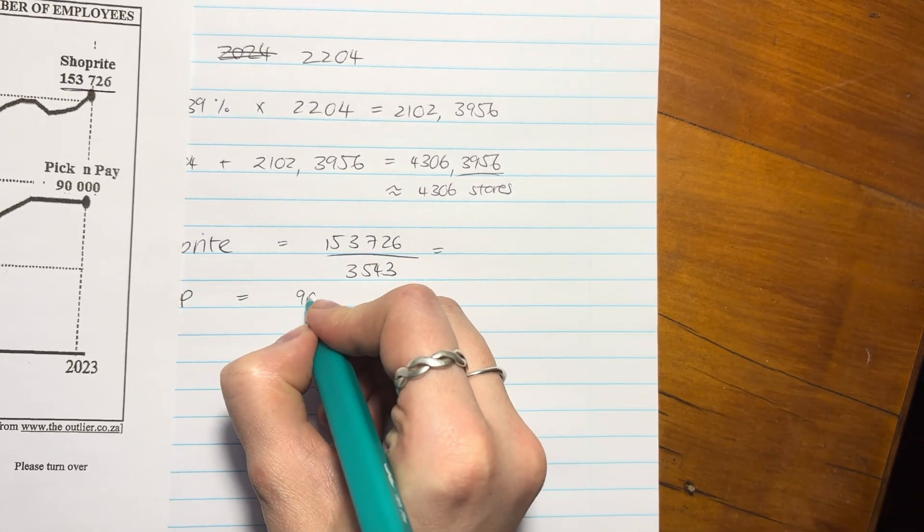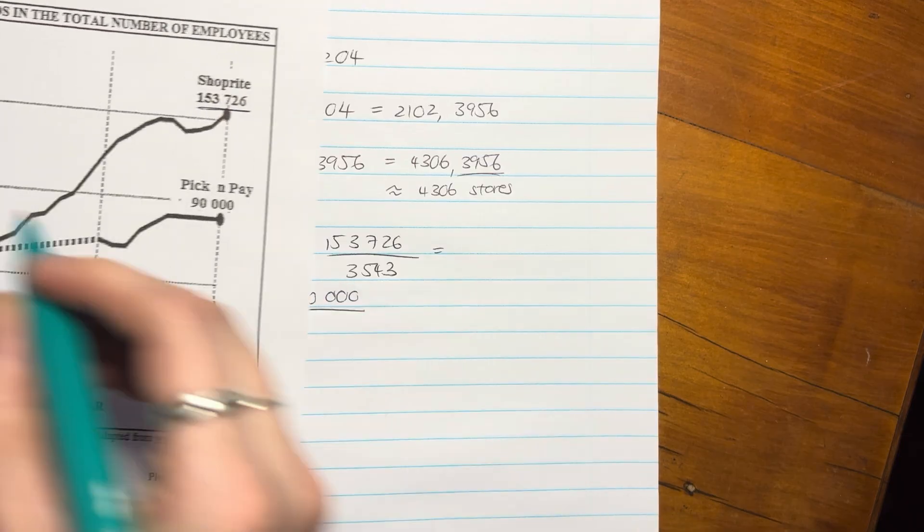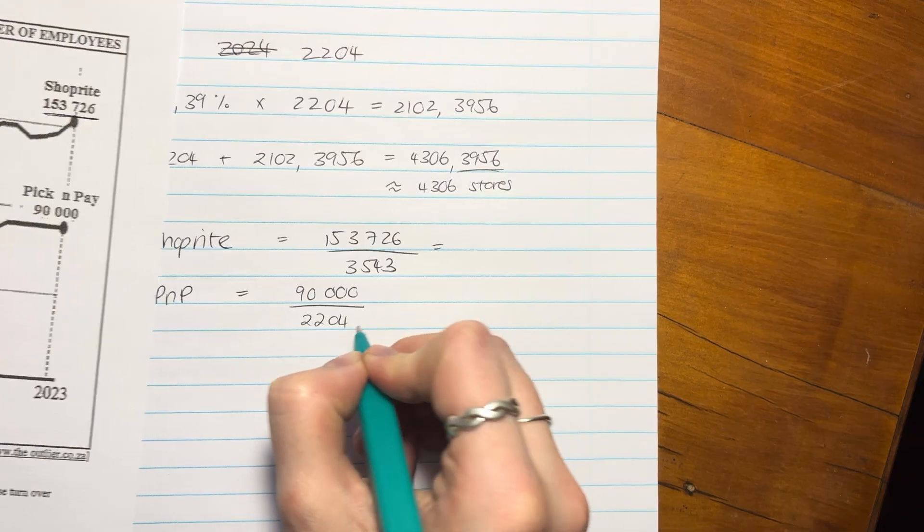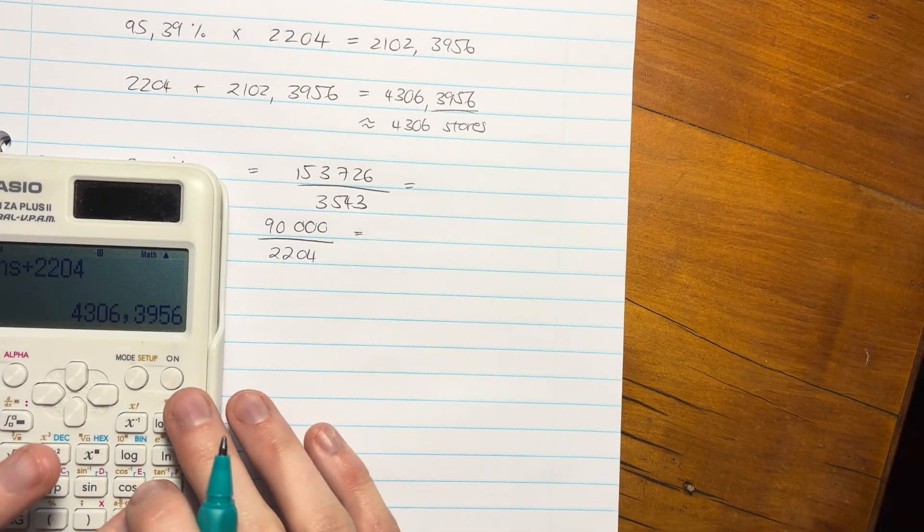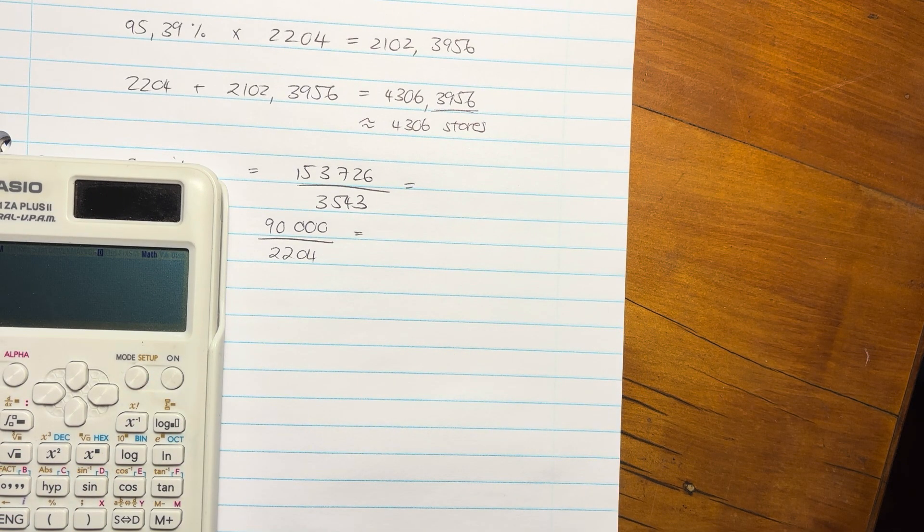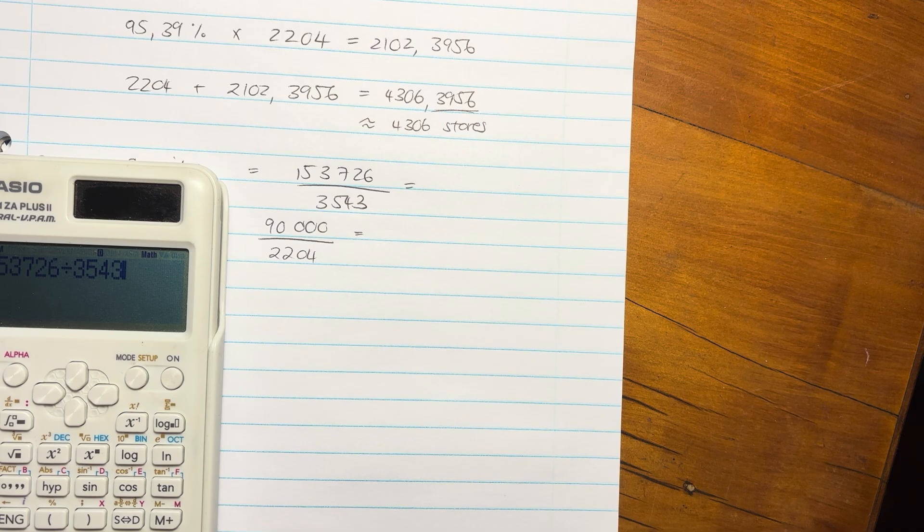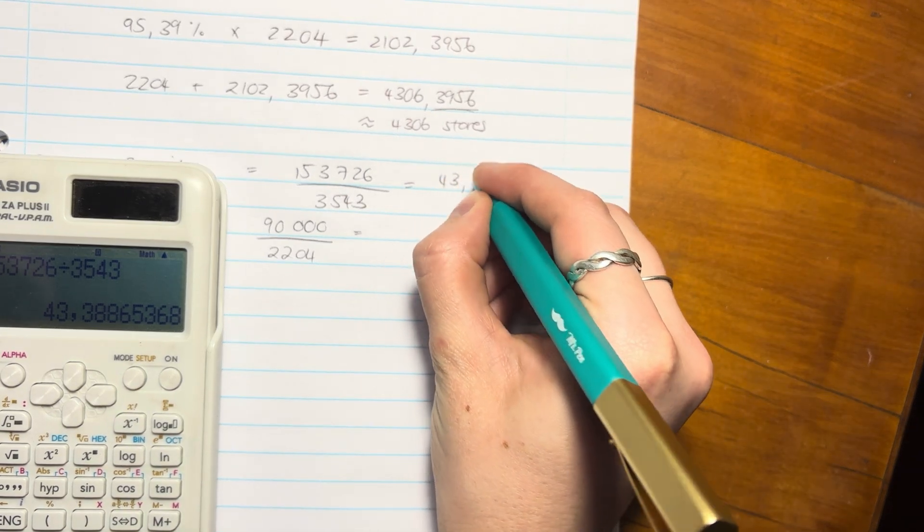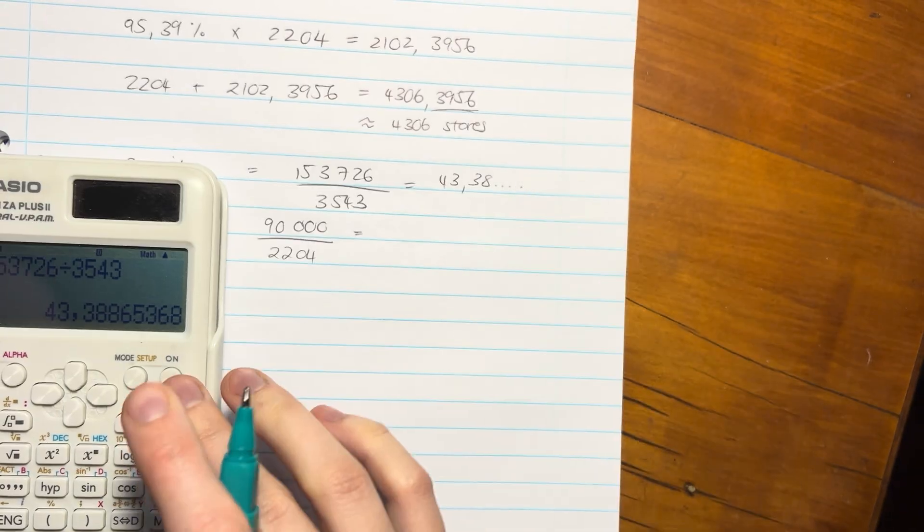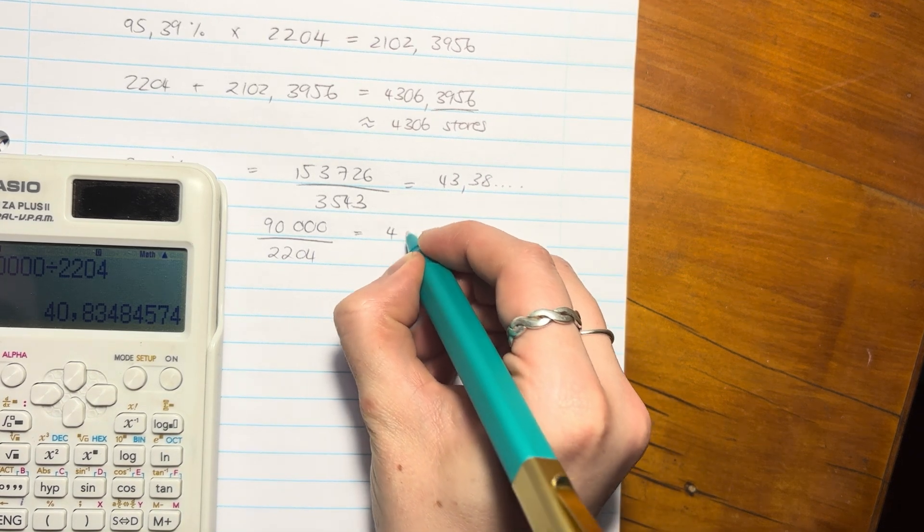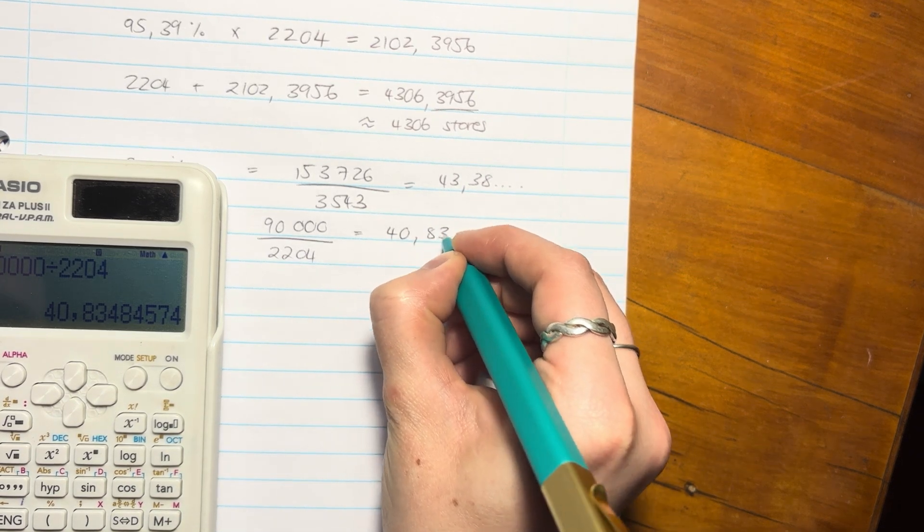And for Pick n Pay, we're going to say 90,000. And we're going to divide it by the number of stores, which is 2204. And we're going to do the calculation there. So let's do it firstly for ShopRite. So we have 153726 divided by 3543. And that gives me 43.38 dot, dot, dot. Let's do the same thing for Pick n Pay. Okay, 90,000 divided by 2204, 40.83 dot, dot, dot.